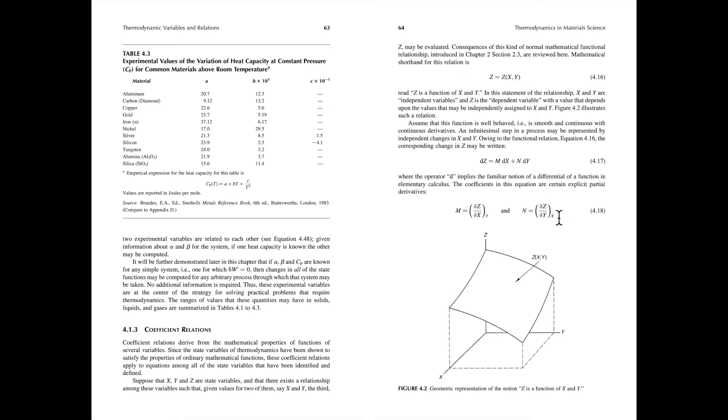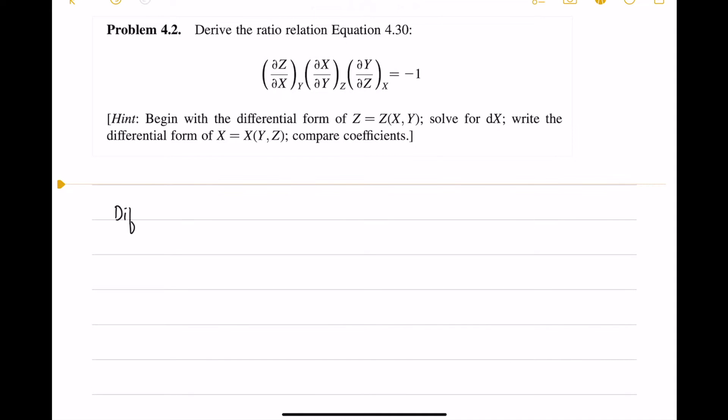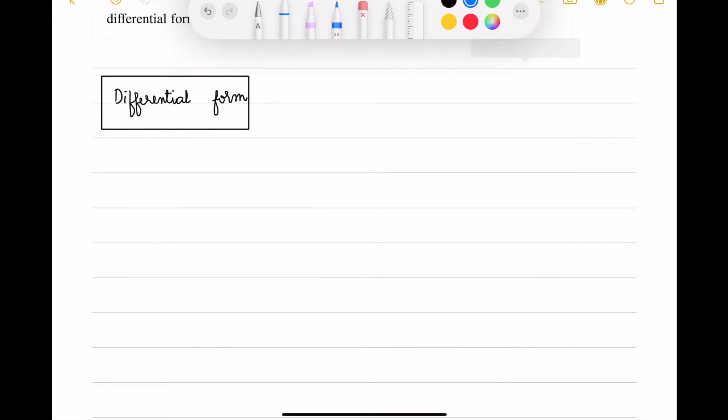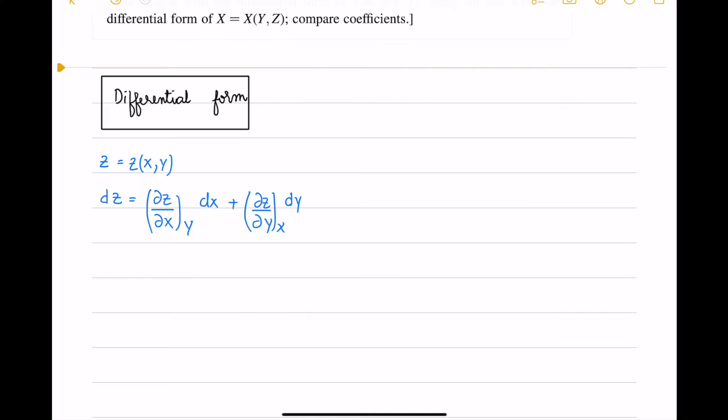In dHoff textbook page 64, we have z as a function of x and y, and dz expanded in terms of dx and dy. The coefficients are partial derivatives of z. Now we write the differential form of z as a function of x and y. So dz is nothing but ∂z/∂x dx plus ∂z/∂y dy.